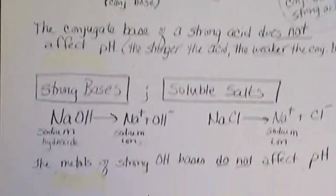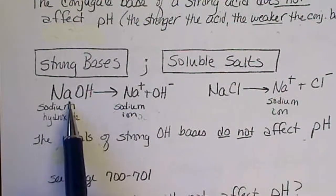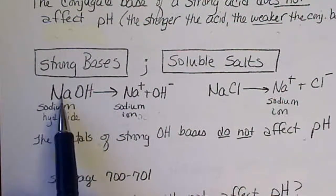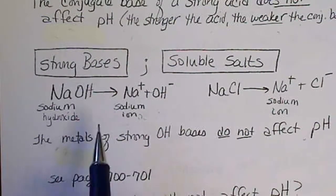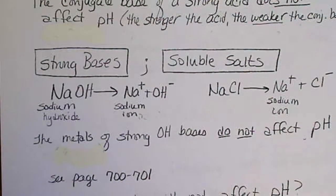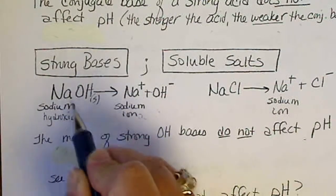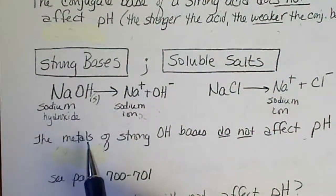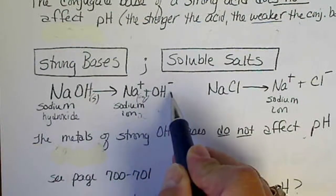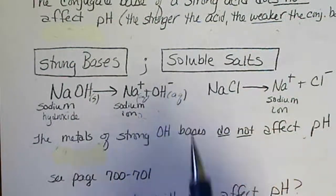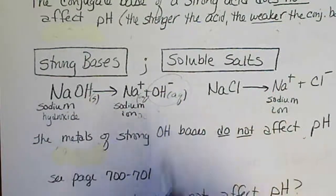Looking at strong bases — these are always the metal hydroxides. Column 1 and the heavier column 2 metals with hydroxide form a strong base. Anything that's ionic — a metal/non-metal compound — would be a solid, and if we dissolve this in water it is completely soluble. So a strong base leaves behind the hydroxide ion.